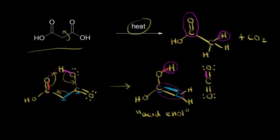The key to a decarboxylation reaction is having a carbonyl beta to a carboxylic acid. Here's our carboxylic acid — the carbon next to it is the alpha carbon, and the carbon next to that is the beta carbon. We saw how this carbonyl was necessary in the mechanism, so what we really need is a carbonyl that's beta to our carboxylic acid in order for a decarboxylation reaction to occur.